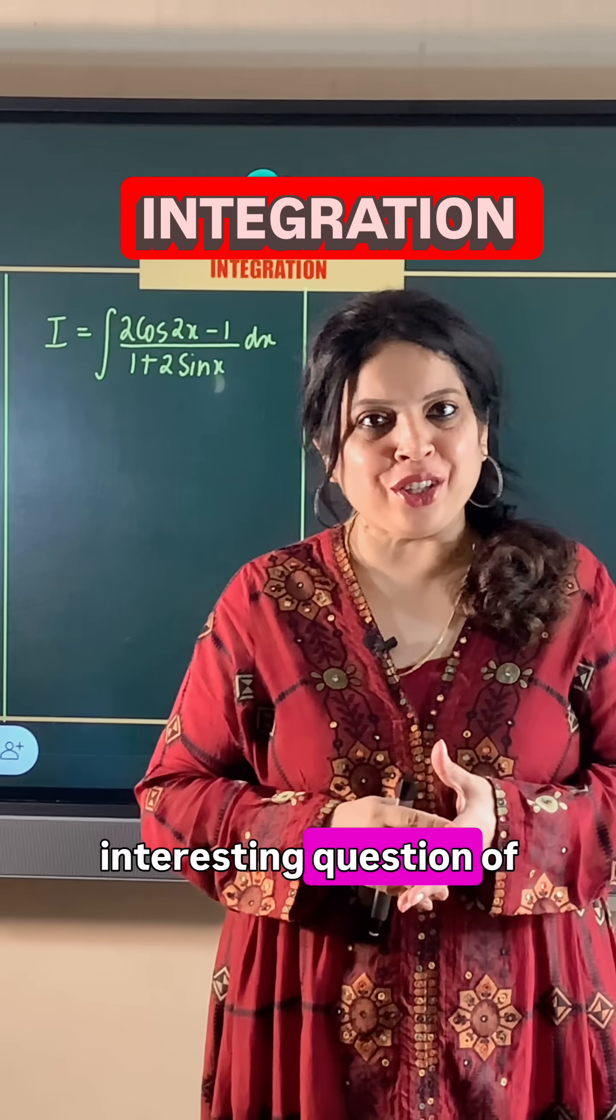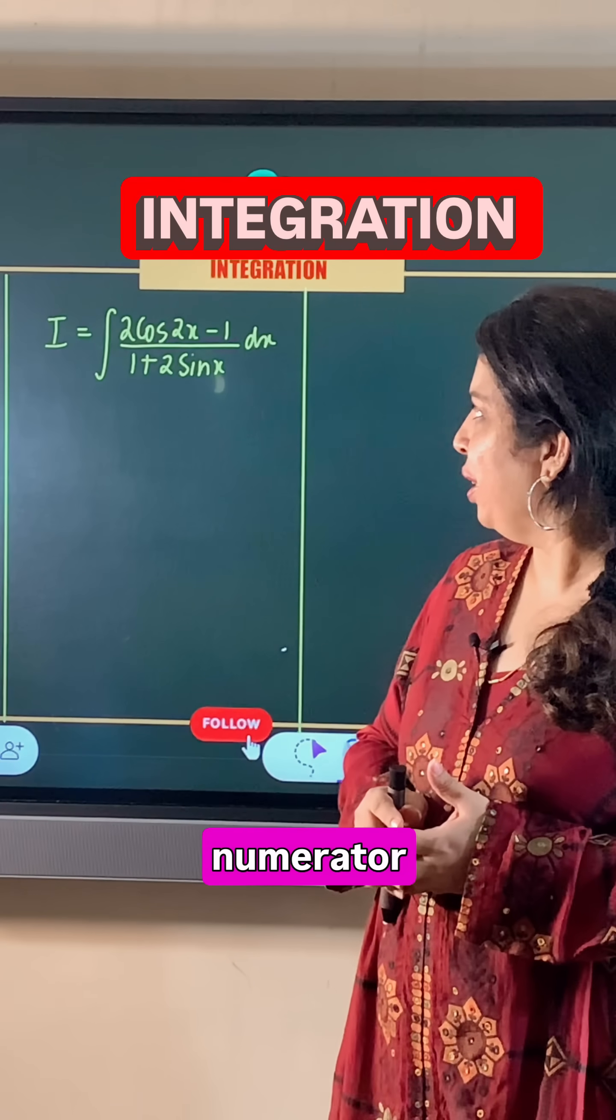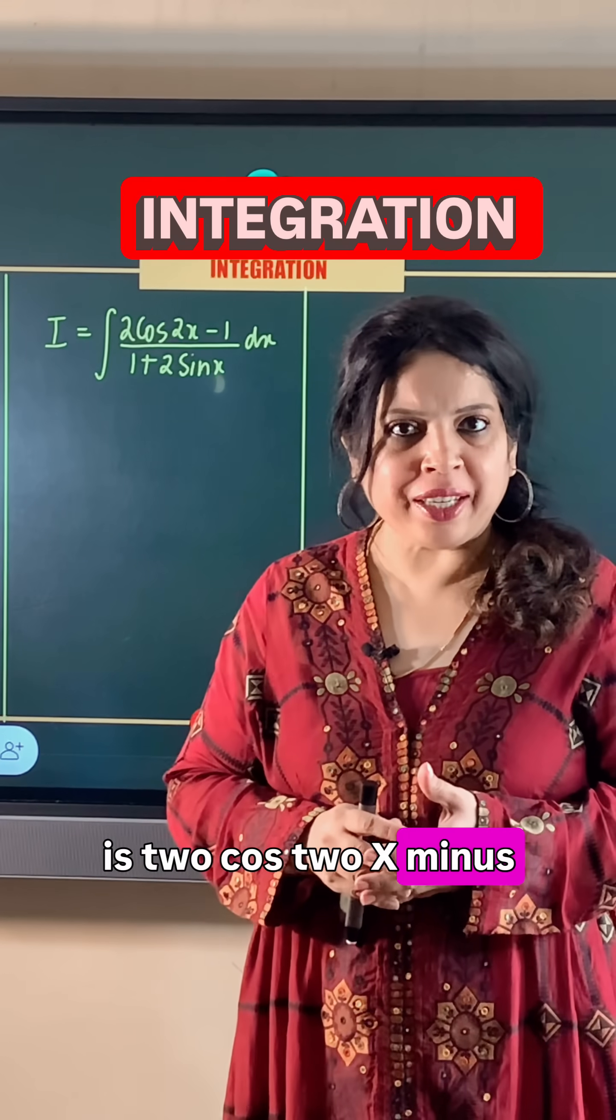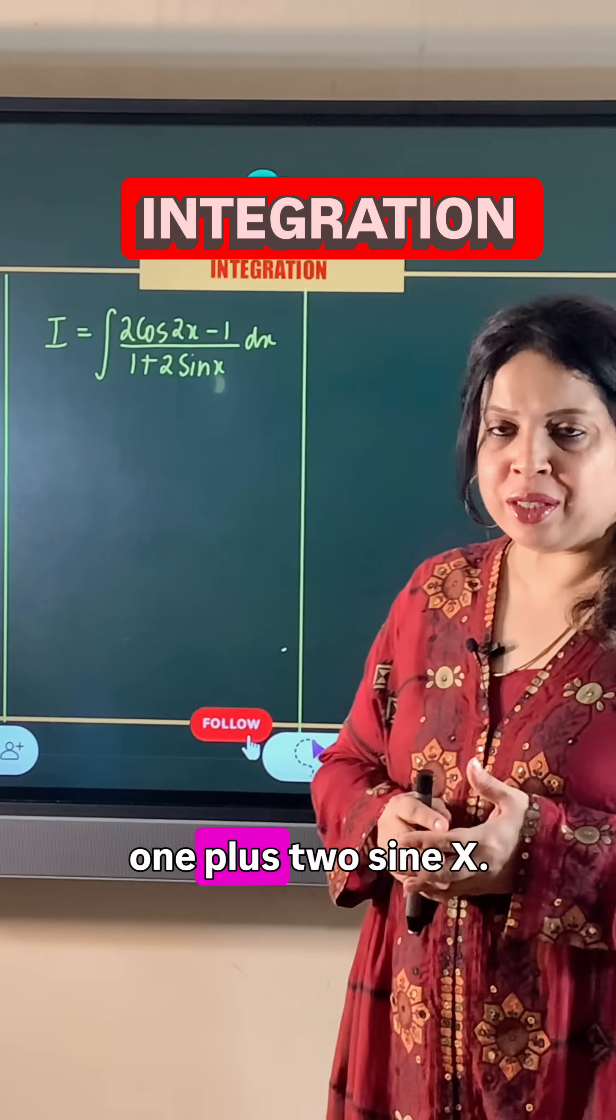This is an interesting integration question where the numerator is 2cos2x - 1 and the denominator is 1 + 2sinx.